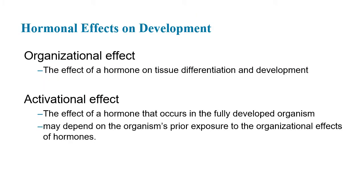Before we get into development itself, there are two different effects that hormones can have. The first is an organizational effect — hormones affect tissue differentiation and development, determining how we differentiate between male and female. Then there's an activational effect, which occurs after the sexual characteristics have been fully developed and basically activates sexual behavior. This may depend on an organism's prior exposure to the organizational effects of hormones, so testosterone exposure earlier in life can have an activational effect later after sexual differentiation is completed.